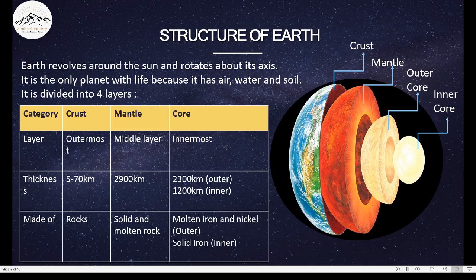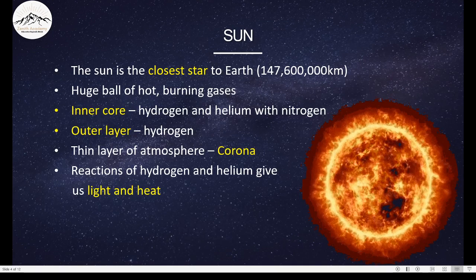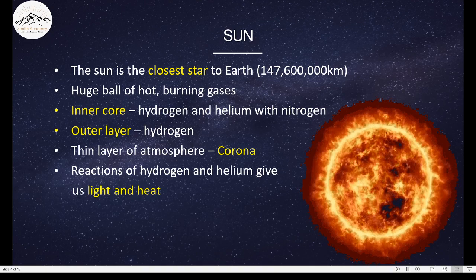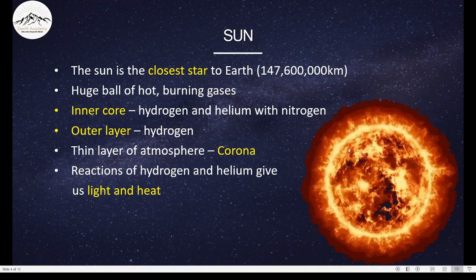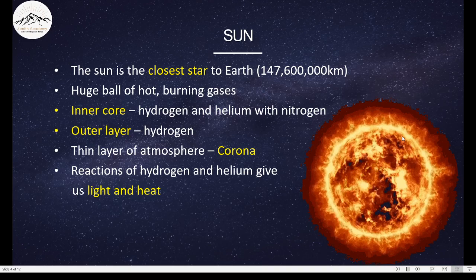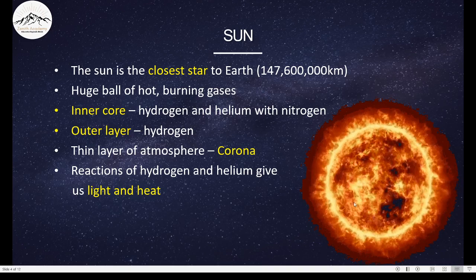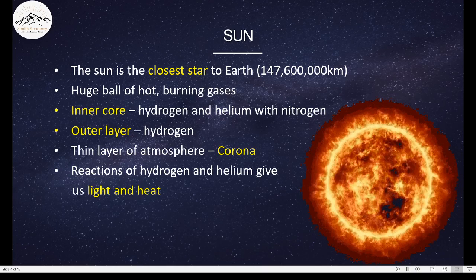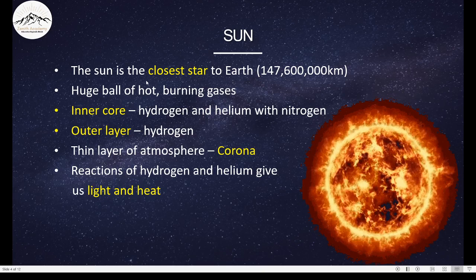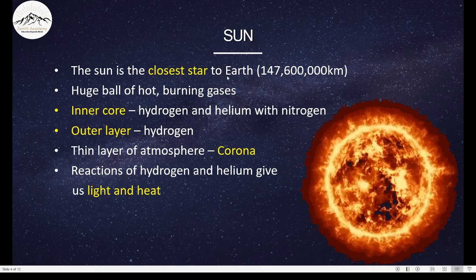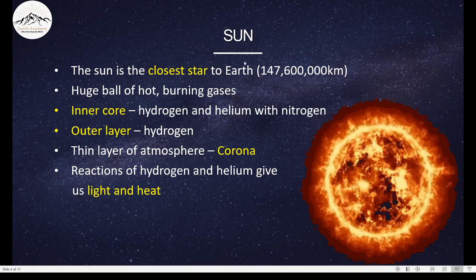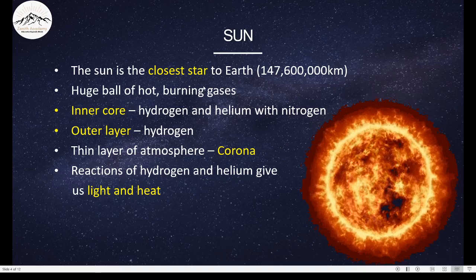So now that we know about the Earth, let's learn about our star, that is the Sun. When I say star, I literally mean that Sun is a star. The Sun is a dwarf star. Remember when I said dwarf planet, that was Pluto. Sun is a dwarf star. It's said to be a small star. But compared to all our planets, it's very big. The Sun is the closest star to Earth. Closest here means 147,600,000 kilometers. And that is the closest star to Earth.